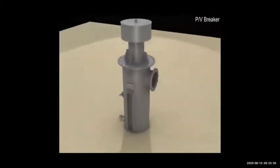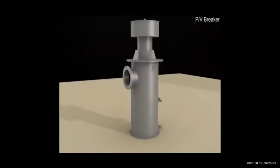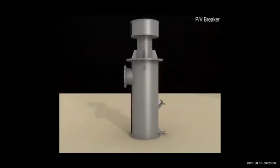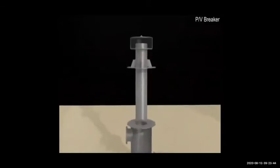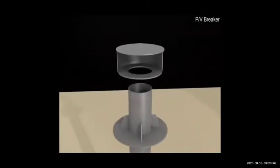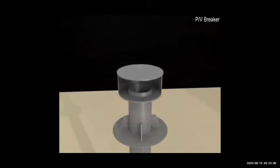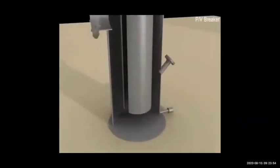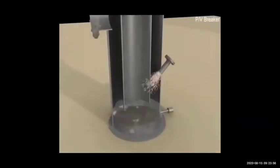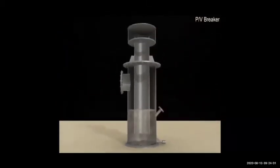This is the PV breaker — you can see it looks like a mushroom vent. Same as the deck seal, there is a pipe inside a tank, and on top it is open. It is filled with water — 2500 mm water gauge or 1800 mm depending on the ship's design.